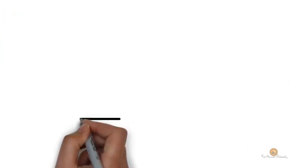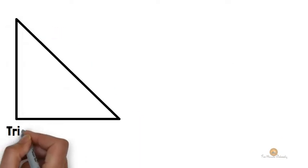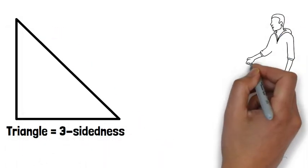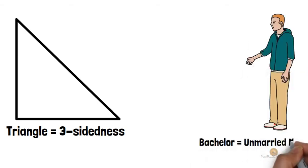Conversely, something is necessary when it must be the case. A triangle must have three sides. A bachelor must be an unmarried man. And so on.